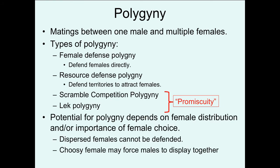The potential for polygyny depends on female distribution and the importance of female mate choice. Females that are widely dispersed can't be defended, so female defense polygyny won't occur. Instead, males may defend a resource to attract females together — resource defense polygyny — or scout to find widely dispersed females in scramble competition polygyny. If females are very choosy, this forces males to display together in traditional display grounds, making it lek polygyny.